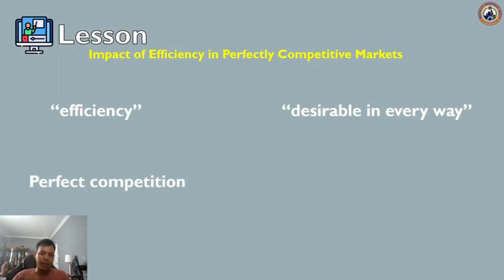Perfect competition in the long run is a hypothetical benchmark. Market structures such as monopoly, monopolistic competition, and oligopoly are more frequently observed in the real world than perfect competition. Firms will not always produce at the minimum of average cost, nor will they always set price equal to marginal cost, so other competitive situations will not always produce productive and allocative efficiency.